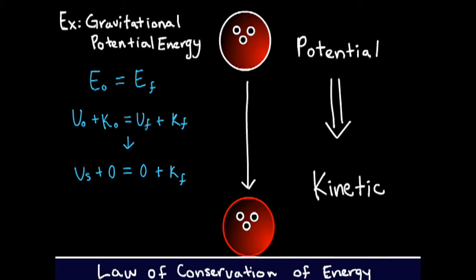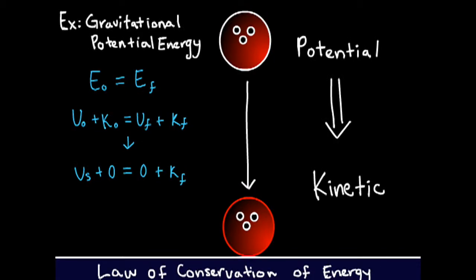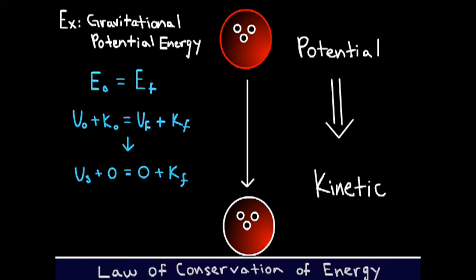All objects abide by something called the law of conservation of energy. For example, a bowling ball lifted a certain height has gravitational potential energy and when released converts that potential energy into kinetic energy by movement.